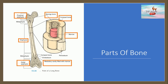Red marrow fills the spaces in the spongy bone. Each epiphysis meets the diaphysis at the metaphysis, the narrow area that contains the epiphyseal plate or the growth plate, a layer of hyaline cartilage in a growing bone. When the bone stops growing, the cartilage is replaced by osseous tissue and the epiphyseal plate becomes an epiphyseal line. The medullary cavity has a delicate membranous lining called the endosteum, where bone growth, repair, and remodeling occurs.